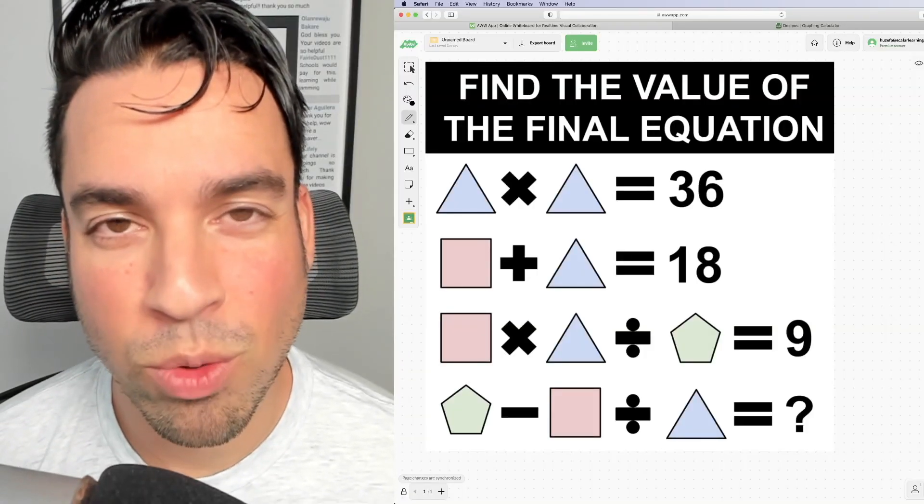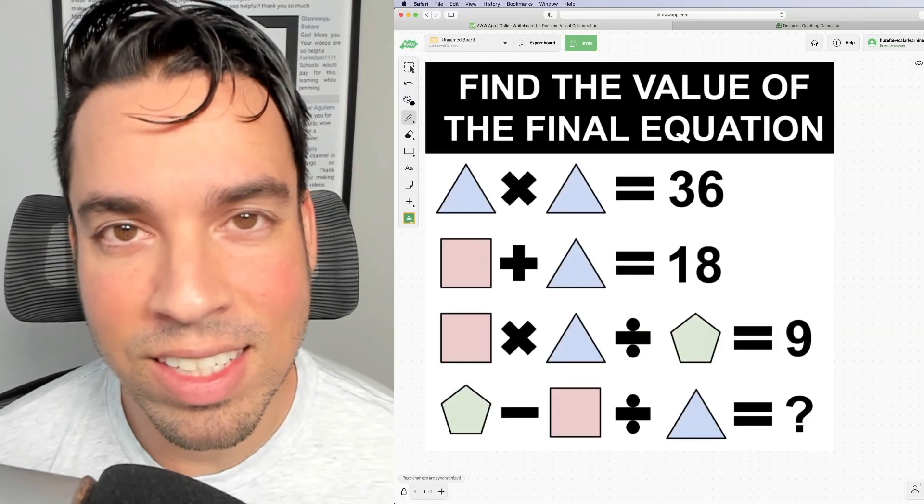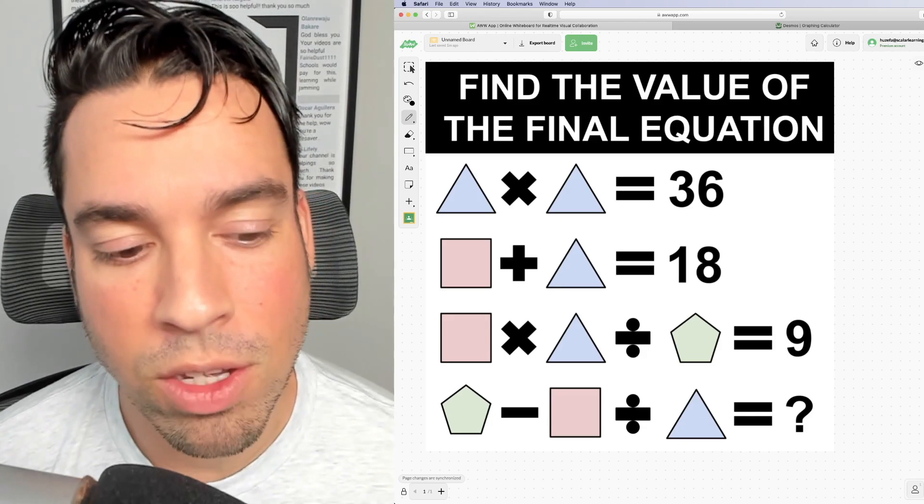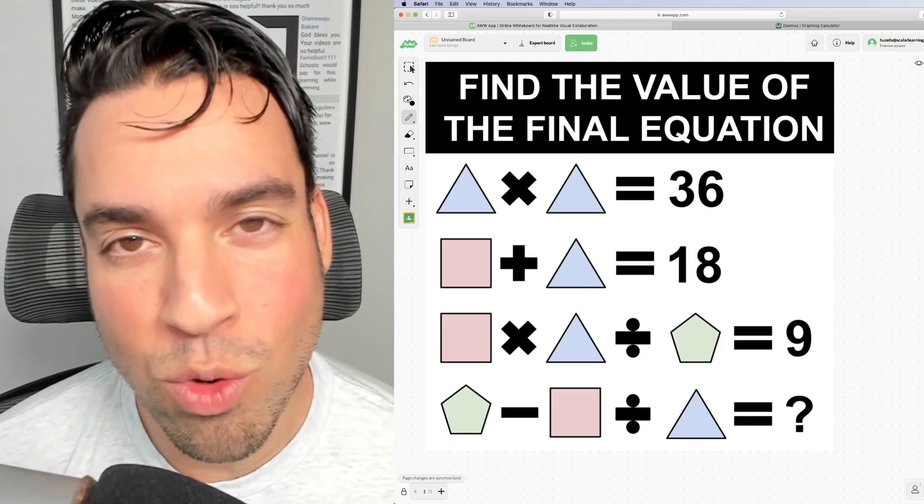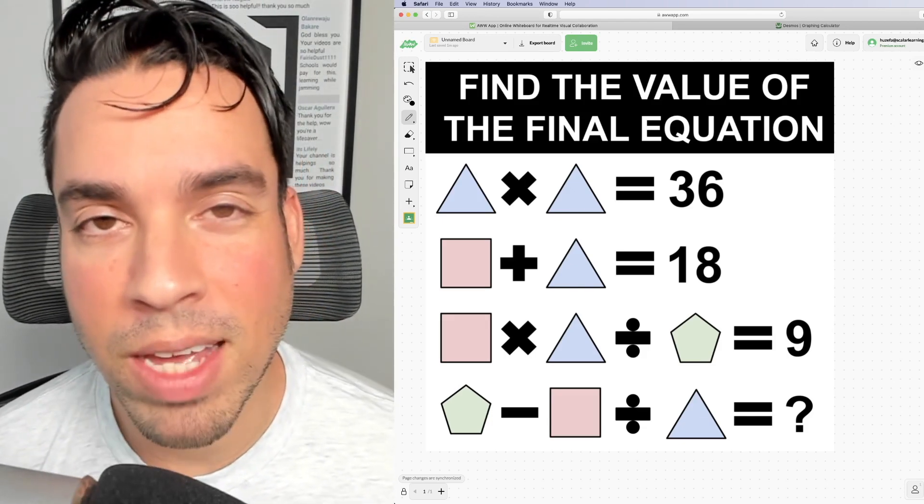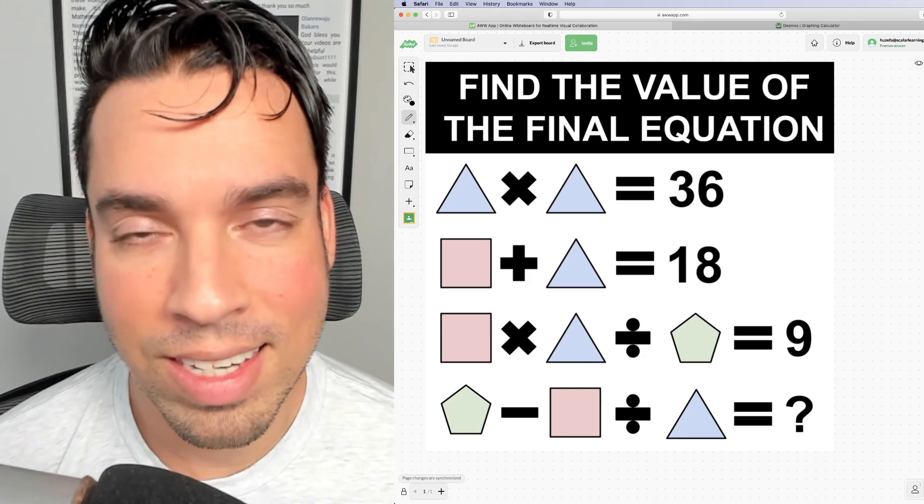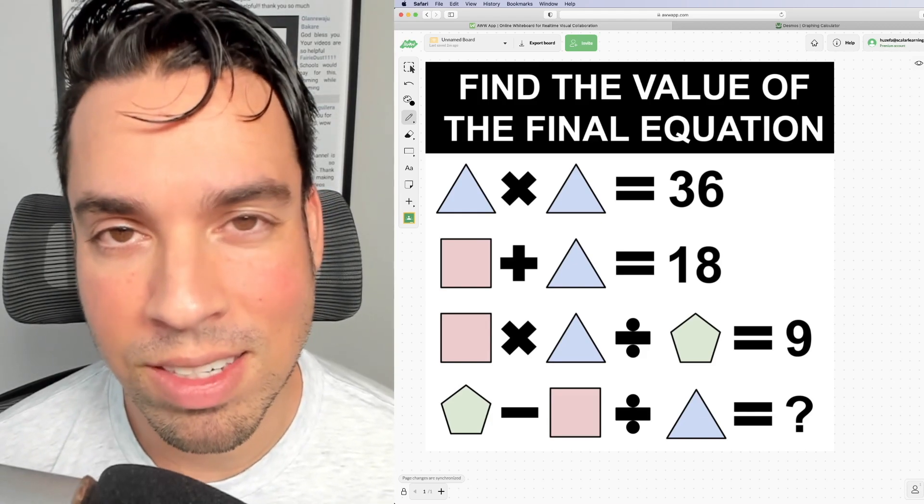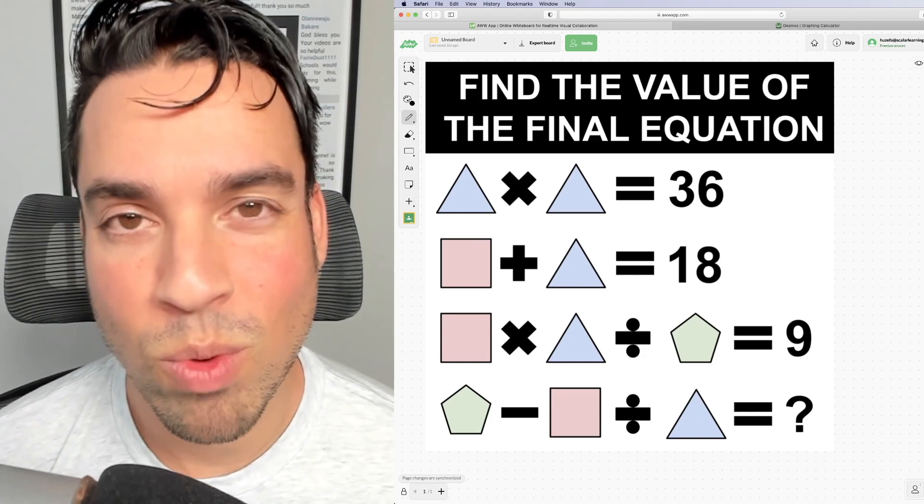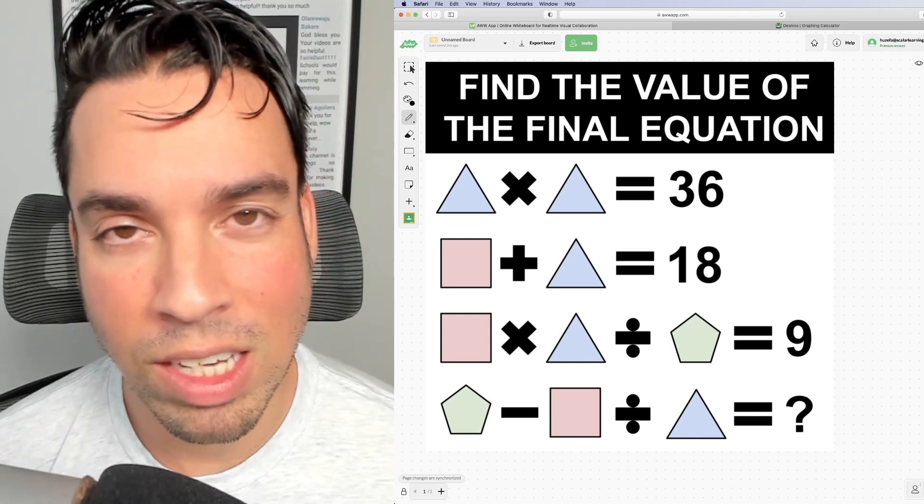What's up everybody and welcome back to another math puzzle. In this one we are asked to find the value of the bottom equation, and in order to do that you need to figure out the value of each and every shape. Every shape and color has the same value. Go ahead and hit that pause button and see if you can figure it out. When you're ready hit play and I'll give you the explanation.